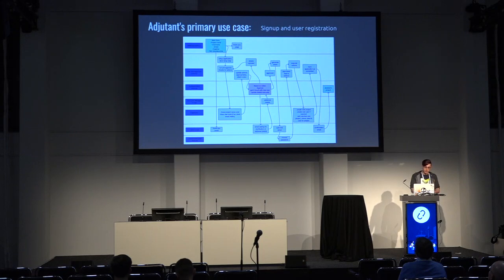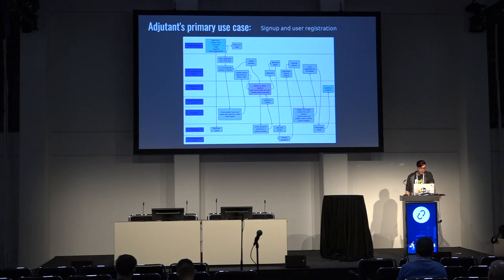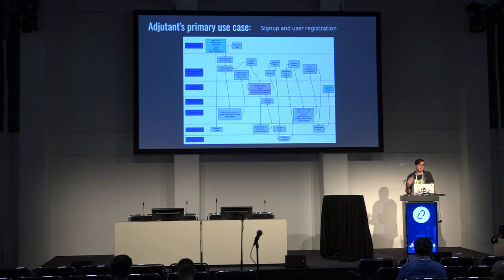We started by building Adjutant mostly to handle one task, which had actually been on the public cloud working group's missing features list for a very long time: sign-up and user registration. Essentially, an API that takes some sign-up form data, runs through some validation, and ultimately creates a valid, fully functioning user and customer account.